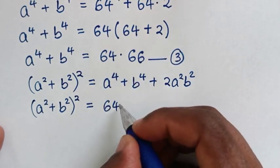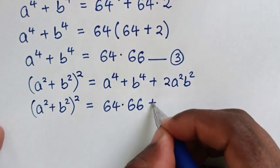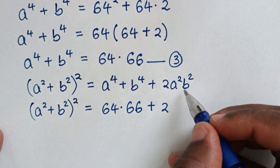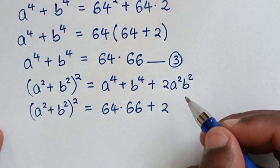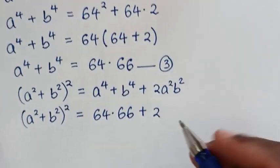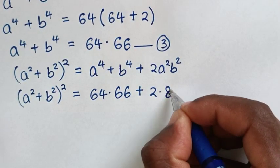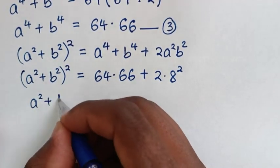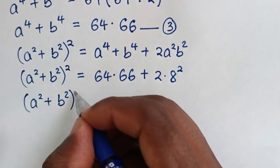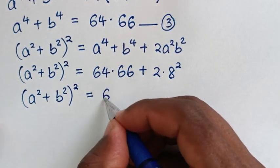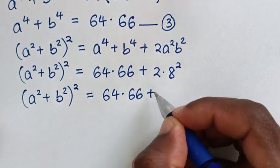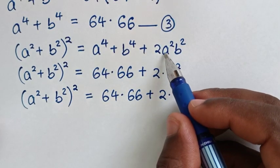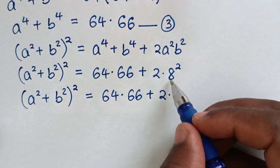So it becomes: a squared plus b squared bracket squared equals 64 times 66 plus 2 times a squared b squared, where a squared b squared equals ab bracket squared. Since ab equals 8, we substitute 8 squared, which is 64.